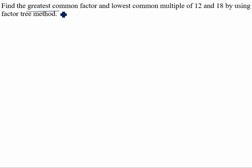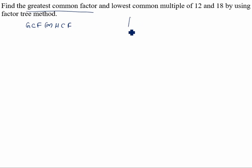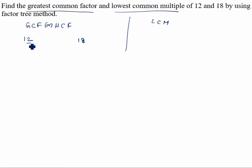First we will do GCF. Greatest Common Factor — the short form is GCF, and another name is HCF, which stands for Highest Common Factor. The short form for Lowest Common Multiple is LCM. We will start with the GCF of 12 and 18. Since 12 ends with 2, it is an even number, so we will use the prime factorization method.